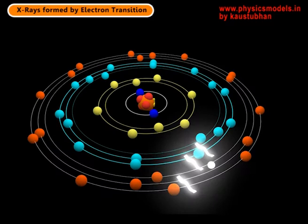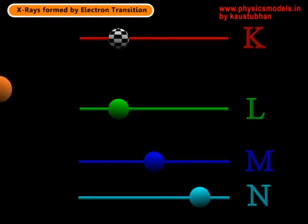Now let's look at a still image of the tungsten anode atom. Close to the nucleus at the center you can see the K shell — some blue colored electrons in the innermost orbit. The next orbit with yellow colored spheres denotes the L shell with its own subshells, and the next outer orbit is the M shell, then the N shell, just to give an idea of the shells.